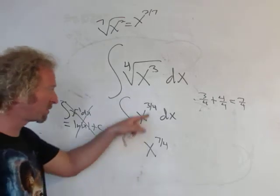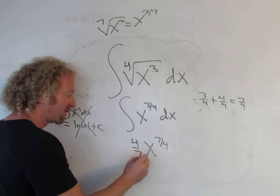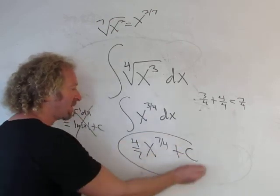And then we divide by seven-fourths. We're always supposed to add one and divide. So divided by seven-fourths, we really multiply, so we get four-sevenths. Then you put a plus C and that's it.